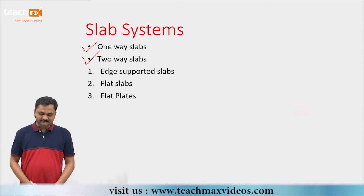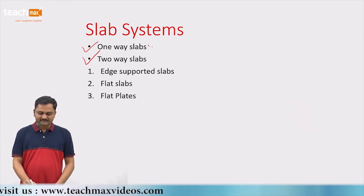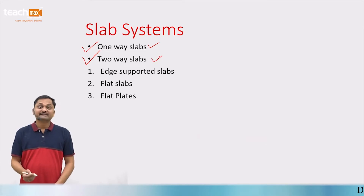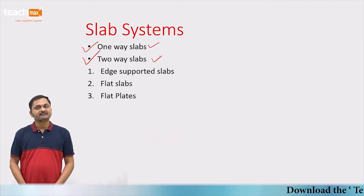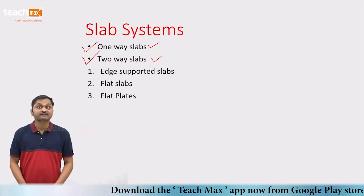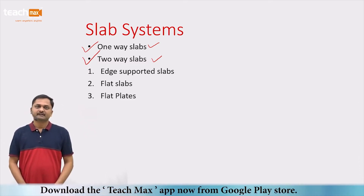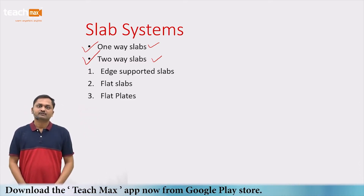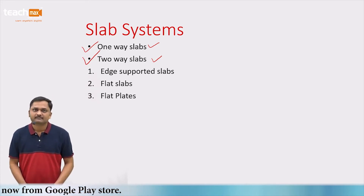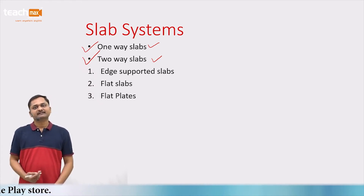For one-way slabs, we assume a one-meter width beam and design accordingly. For two-way slabs, we use bending moment coefficients mentioned in Table 26 of IS 456-2000 to find out the bending moments and then design the slab.